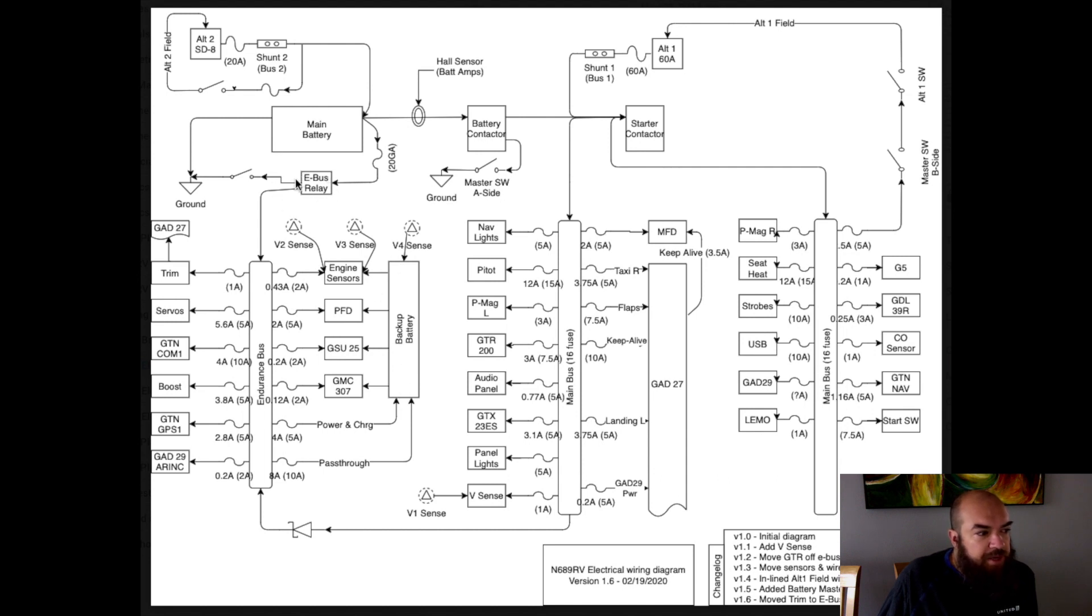So you'll notice on the main bus, everything else is here and everything else has its own fuse. I try and have no doubling up on fuses, mostly because I have the space, the bus space. I have two 16 fuse bus blocks, in addition to the endurance bus. And you'll notice that the 16 fuse is not fully populated. There's one, two, three, four, five, six, seven, eight, nine, ten, eleven, twelve. So there's four extra spots over here that I can add stuff to.